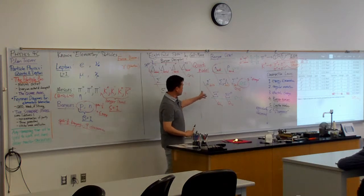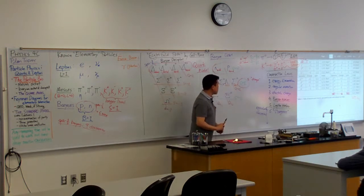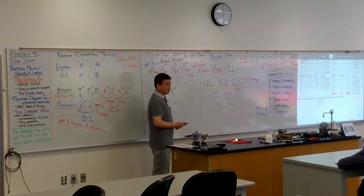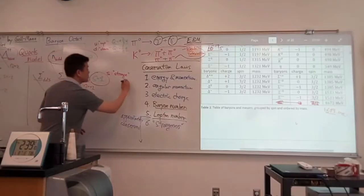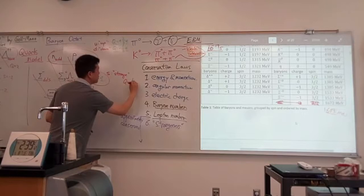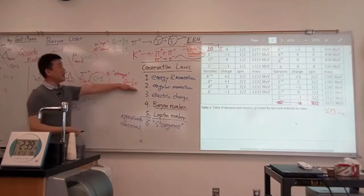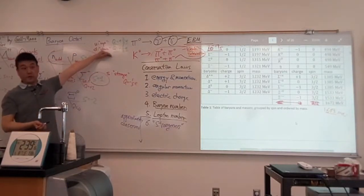So once you guess this, what would the charge of the strange quark be? Negative. Yeah, negative one-third. So charge of the strange quark is the same electric charge as charge of the down quark.